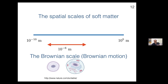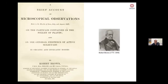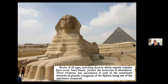The Brownian scale is also the scale of a cell — the larger cells that make up your body, or smaller bacterial cells. Brownian motion was named after the botanist Robert Brown, who used a microscope in 1827 to look at pollen grains in water and could not explain what he was seeing. Among the inorganic bodies he studied were little pieces of the Sphinx — chosen because it had stayed in the desert under the scorching sun for millennia, least likely to contain any trace of organic material.